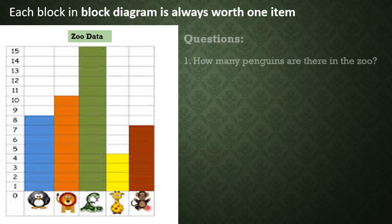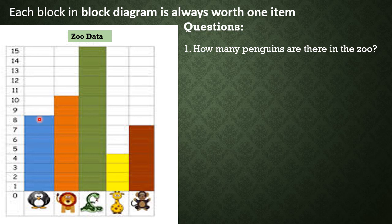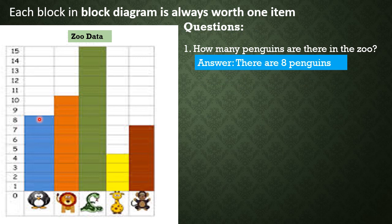First question: How many penguins are there in the zoo? Remember that each block is always worth one item. Let's count the number of blocks — 1, 2, 3, 4, 5, 6, 7, 8. There are 8 colored blocks. So therefore, there are 8 penguins in the zoo.